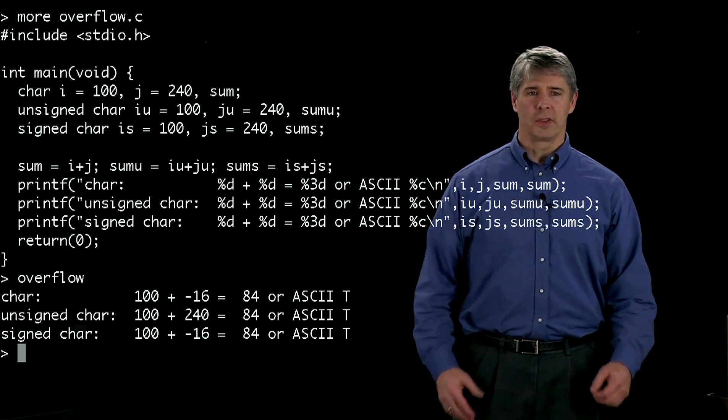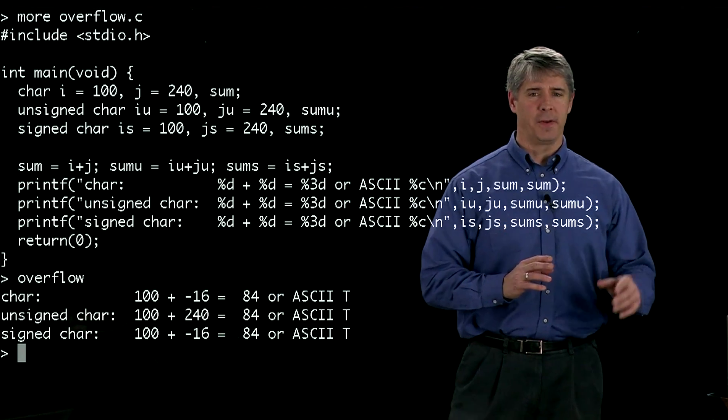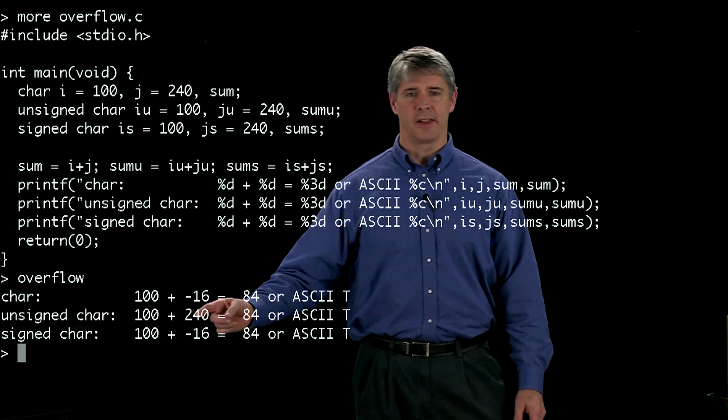For unsigned char, which can represent values 0 to 255, we see that i and j get their correct values.